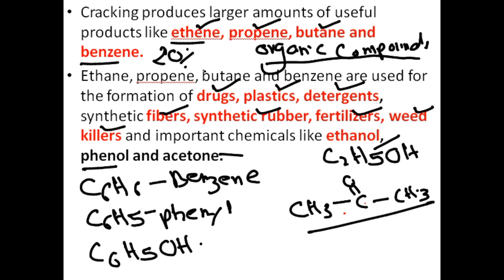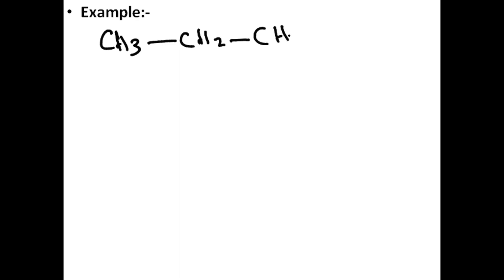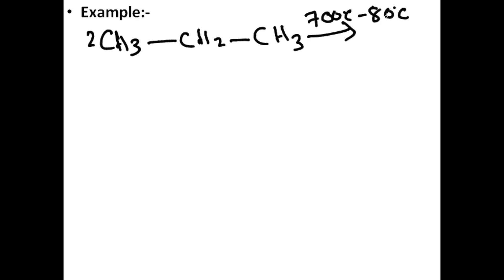Now let's talk about one example of how we crack molecules into smaller ones. Suppose we have propane — CH₃CH₂CH₃ — and we are taking two molecules of propane. We need to break them, and for cracking we need to maintain some conditions: we apply a temperature of 700 to 800°C, and in the absence of air, because these are organic compounds that can catch fire.